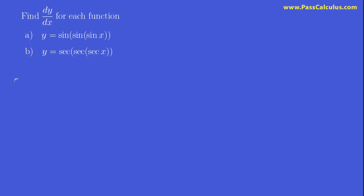So the first one here, let's unravel it. dy/dx will be what? We're going to work from outside in. We're first going to knock off this sine, and then this sine, and then we're finally going to gain access to the innermost sine. Let's see how this goes.